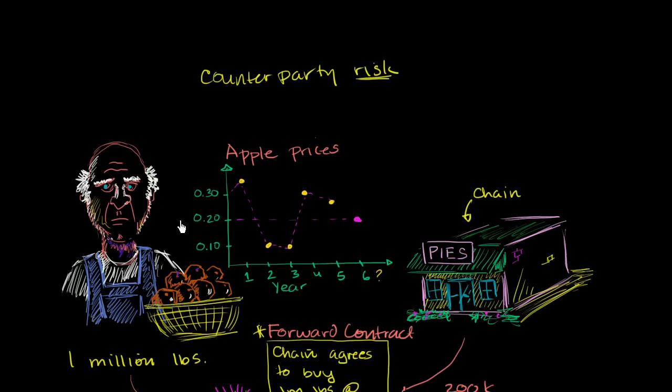The other thing that starts to worry either one of these is, what if they start to have second thoughts about this forward contract that they entered into? Would they be able to maybe sell their obligation to someone else? So is there any way to trade the contract?